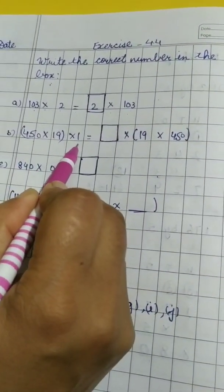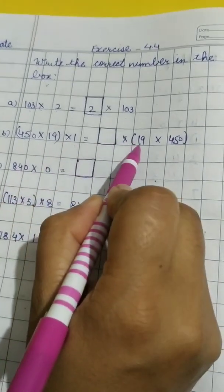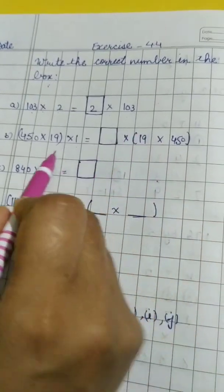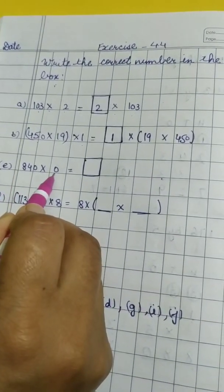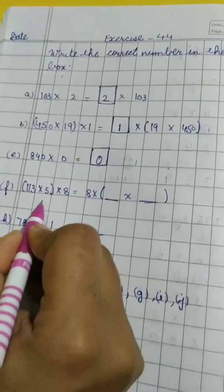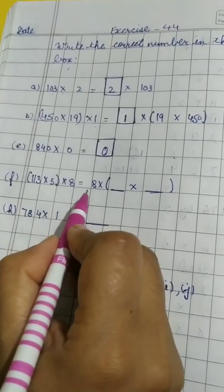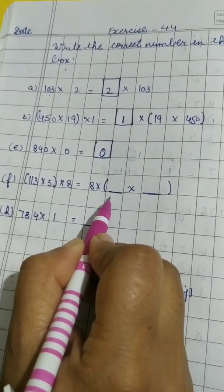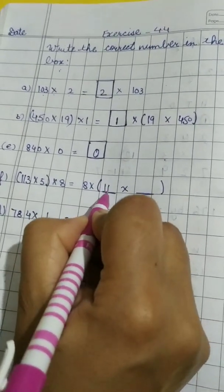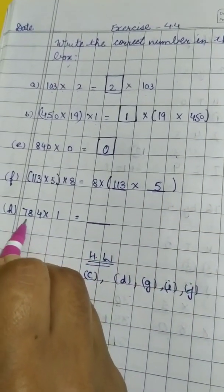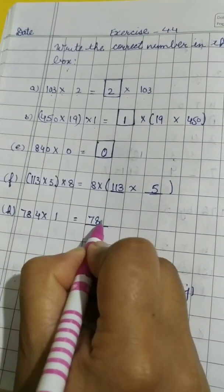Here we have three numbers, and when we change the order the product remains the same. 19 and 450 are in one group but one number is missing — we write 1 there. Something multiplied by 0 is always 0. Using the property that when we multiply three numbers the order can be changed but the product remains the same: here we have 8 but two numbers are missing — those are 113 and 5. The last one: something multiplied by 1 is always the number itself, so the answer here is 784.